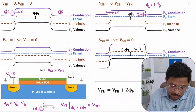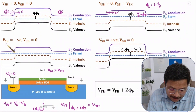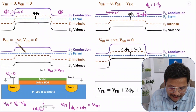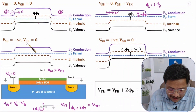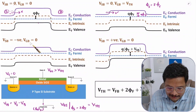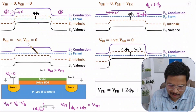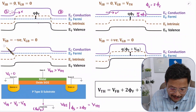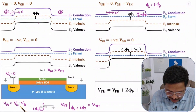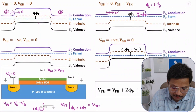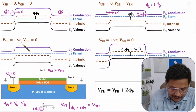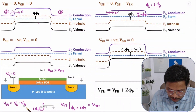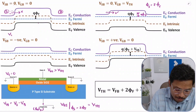In the third case, VSB is negative and no gate voltage is applied, so VGB is zero and VSB is negative. Since VSB equals VS minus VB, if VSB is negative then the body voltage is positive.